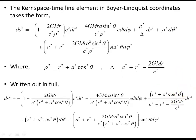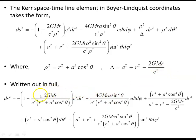The Kerr spacetime line element, or spacetime interval, in Boyer-Lindquist coordinates often takes this form, with rho squared and delta defined by their respective expressions. Written out in full, this is what the spacetime interval or spacetime line element looks like — quite an expression.